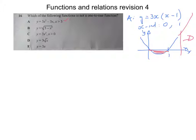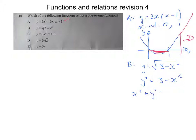Now looking at option B: what sort of shape of graph is that going to be? I'll rearrange it. y equals the square root of 3 minus x squared. Squaring both sides gives y squared equals 3 minus x squared. Adding x squared to both sides gives x squared plus y squared equals 3. So it's a circle graph with a radius of root 3.